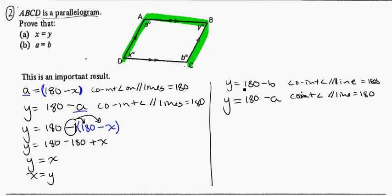So here I've got two statements, and they're both equal to Y. So I can write them equal to each other. So I could say something like, therefore, 180 minus B is equal to 180 minus A. Again, my reasoning for that is because they're both equal to Y. They're both equal to the same thing, so they must be equal to each other.